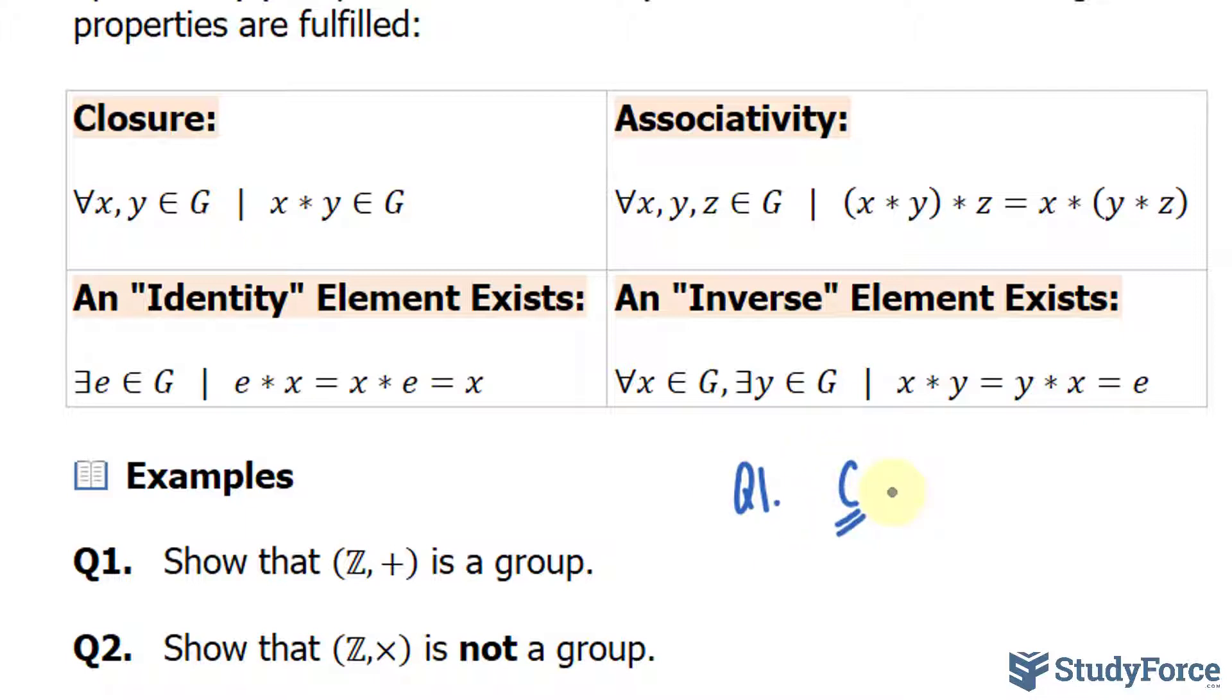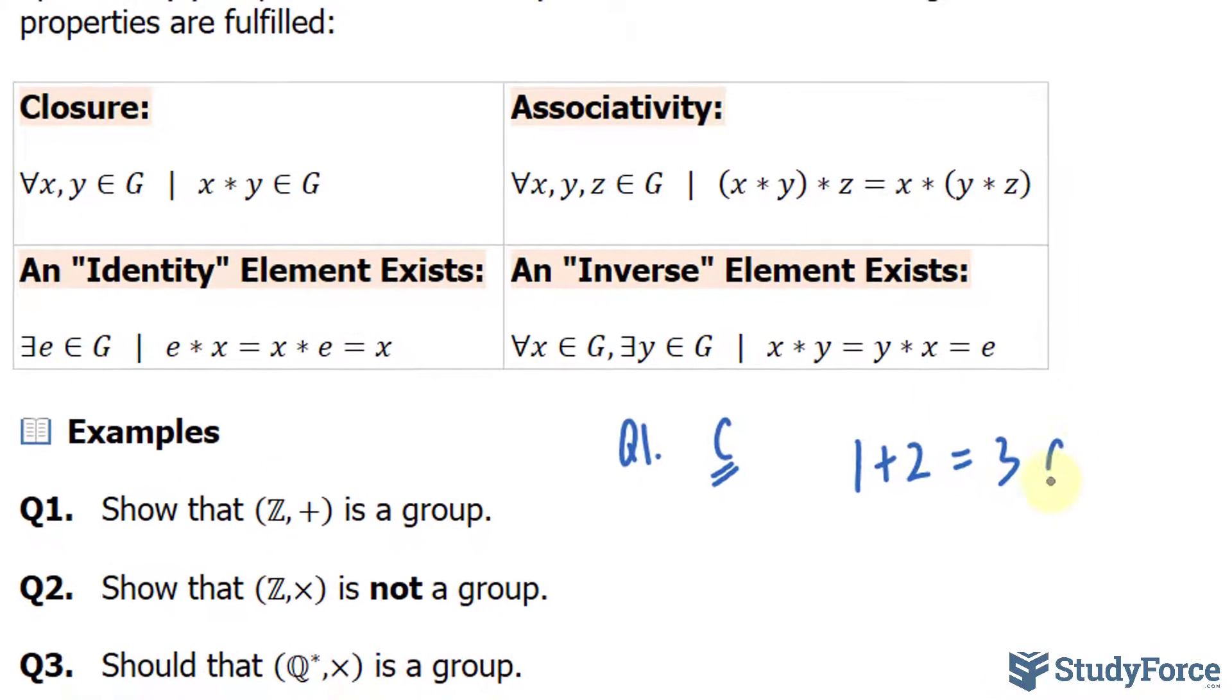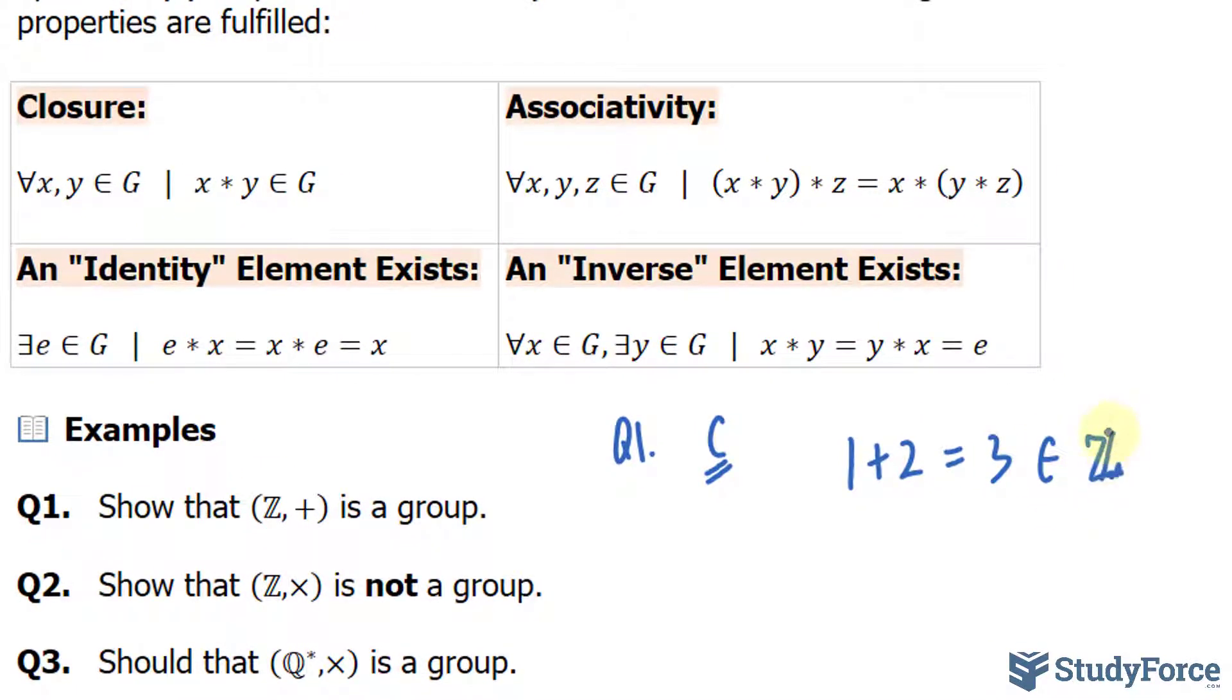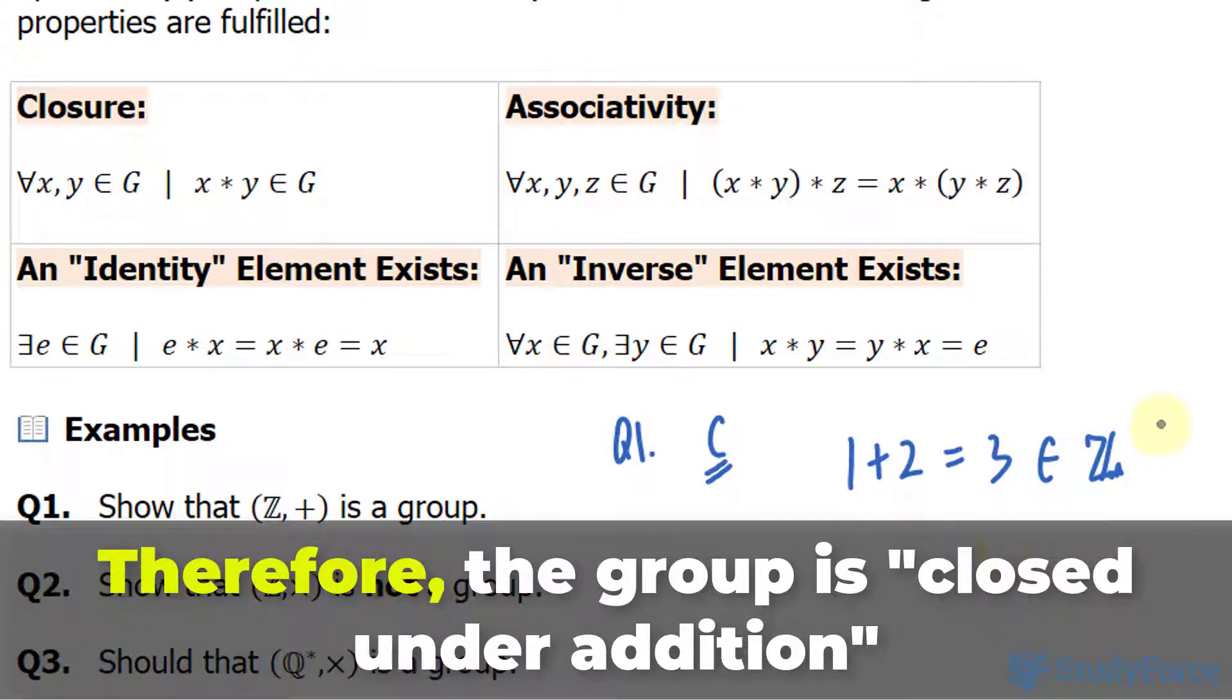If you pick two elements within Z, let's say 1 and 2, those are integers. If you add 1 and 2, you get 3. 3 is also found in Z because it's an integer. So closure is satisfied.